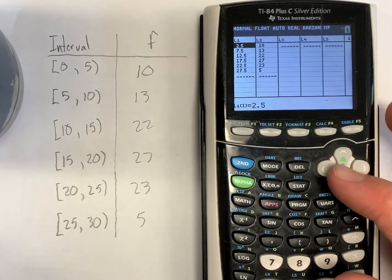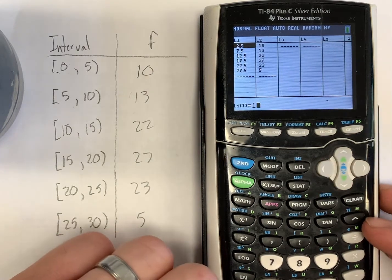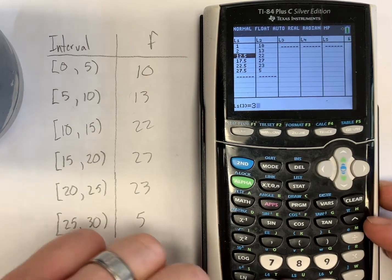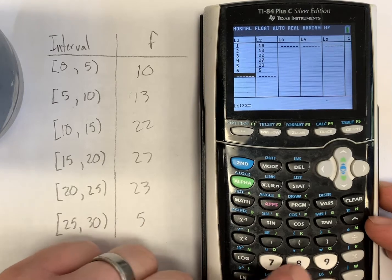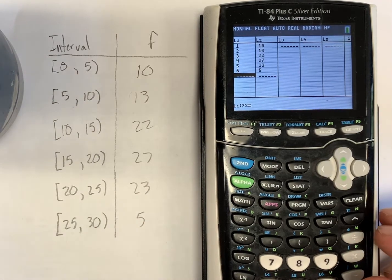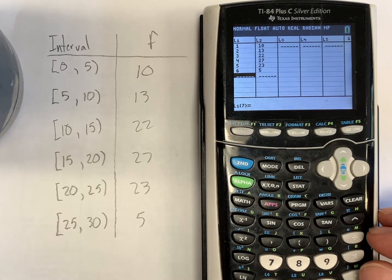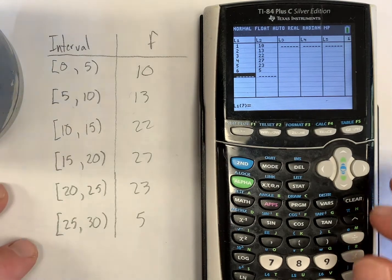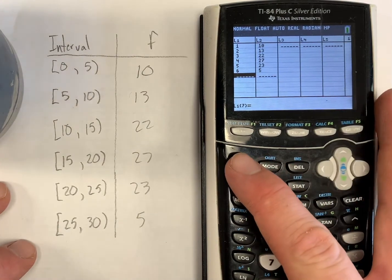And instead of typing in our mid-interval values, let's just type in bin sizes of 1, 2, 3, 4, 5 and 6. Because if we're just looking for the comparison of frequencies, we don't really care about that horizontal scale as much. So now we'll go back and we'll graph that again, we'll go into second function stat plot.